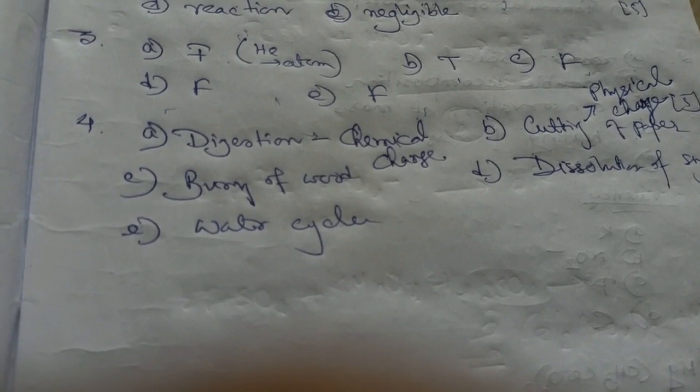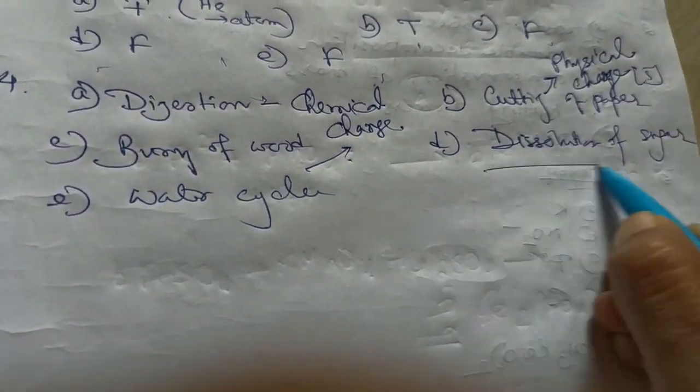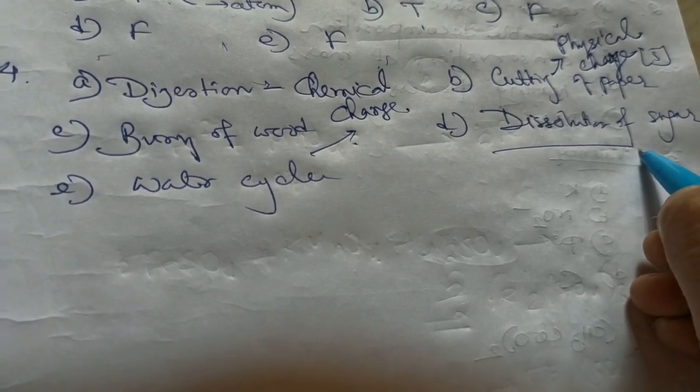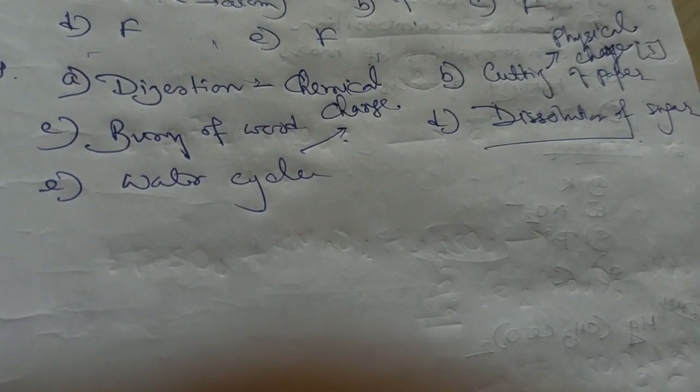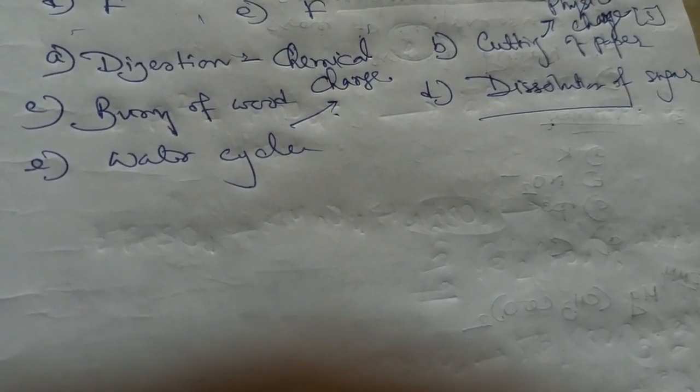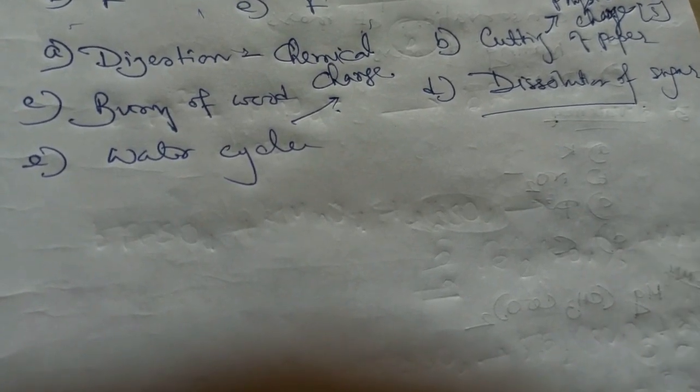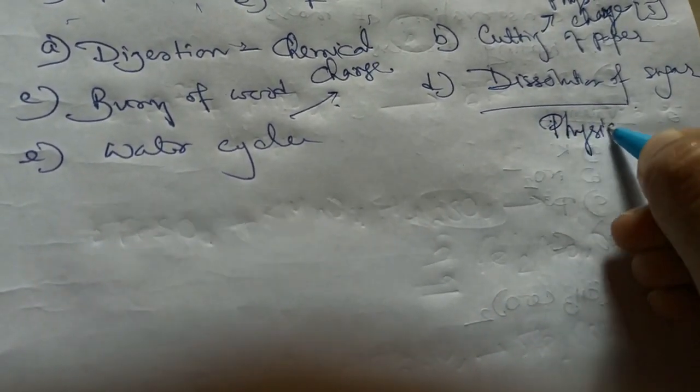Third is burning of wood. Burning is actually itself a chemical change. Dissolution of sugar, this is about solubility of sugar. You are adding sugar to water, we are getting solution of sugar. And after evaporation, we are getting back the sugar again. So we are getting back the starting material. So it's of course a physical change.